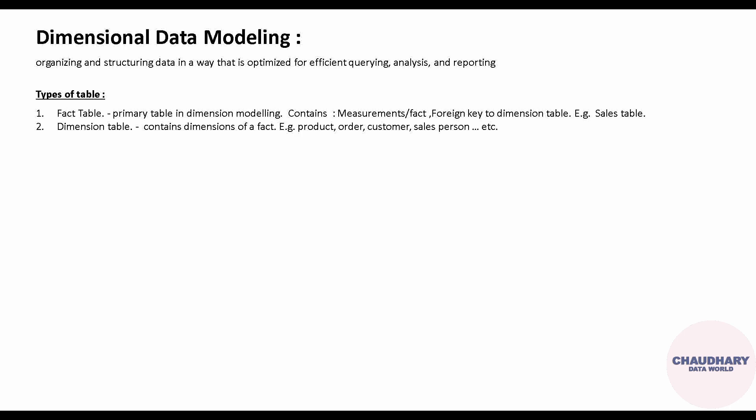Now the next concept: what are the types of tables we consider in dimensional data modeling? There are basically two types of tables — the fact table and the dimension table. The fact table is the primary table in dimensional modeling, and it is dependent on the dimension table. The dimension table contains the dimensions of the fact. For example, suppose you have a sales table — this sales table is a fact table in which all the details regarding sales are stored, such as which customer made a purchase, which order was executed, and which salesperson sold the product.